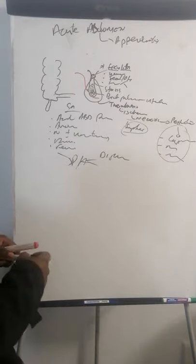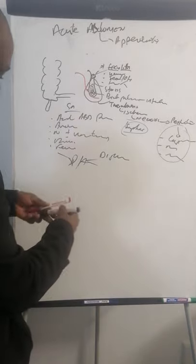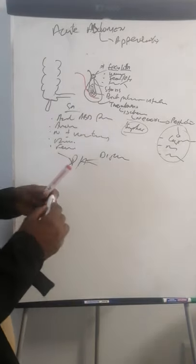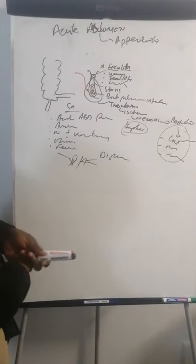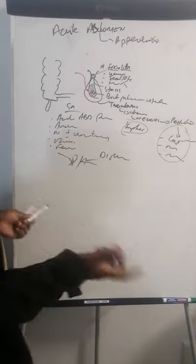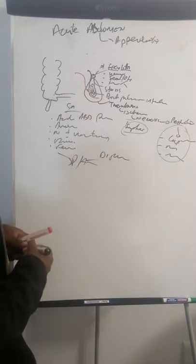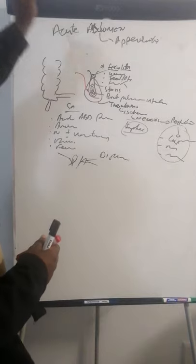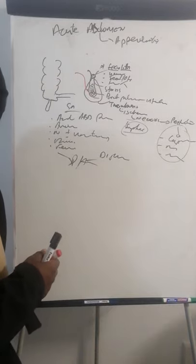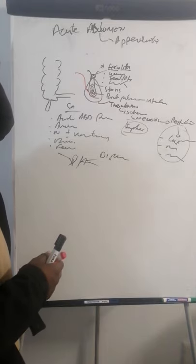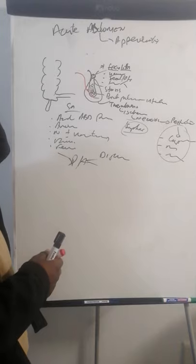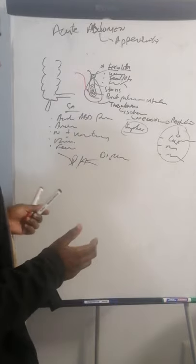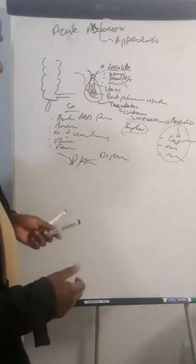Check where the tenderness is. The patient may tell you the pain started periumbilically and shifted to the right iliac fossa — though not all patients report this migration. A patient who does not mention periumbilical pain shifting to the right iliac fossa may or may not have appendicitis. Check whether the abdomen is soft or tense, and note if pain is localized to the right iliac fossa.